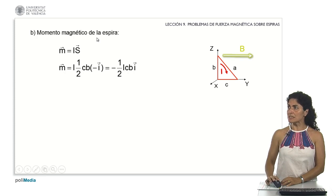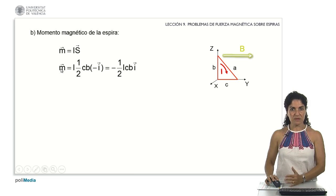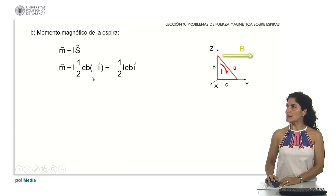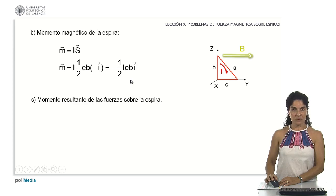I calculate the magnetic moment of the loop as previously done. Naturally, the magnitude of the surface is determined by half of the base multiplied by the height. Taking into account the base C, the height B, and considering the direction negative I along the unit vector I, I obtain the magnetic moment.